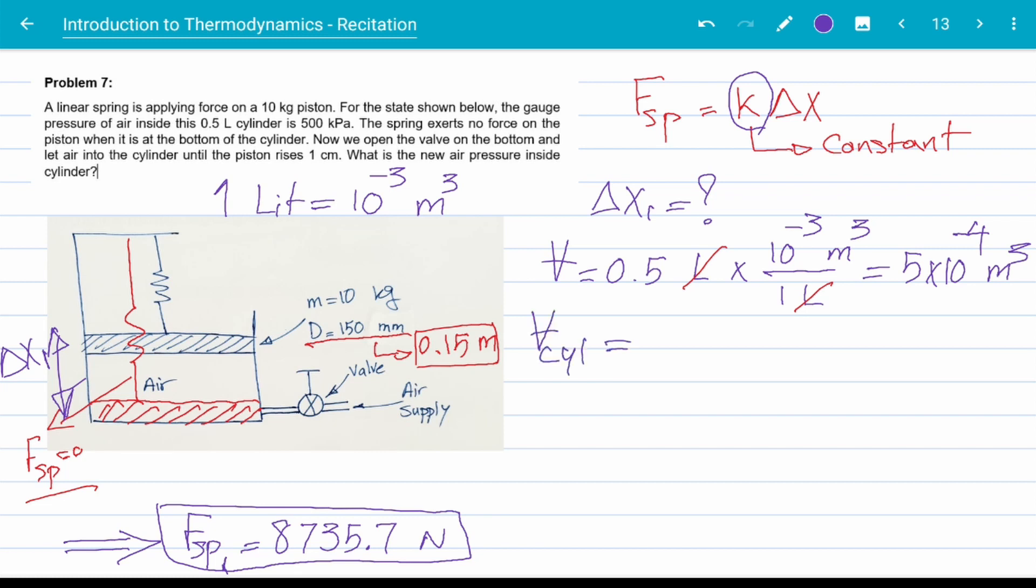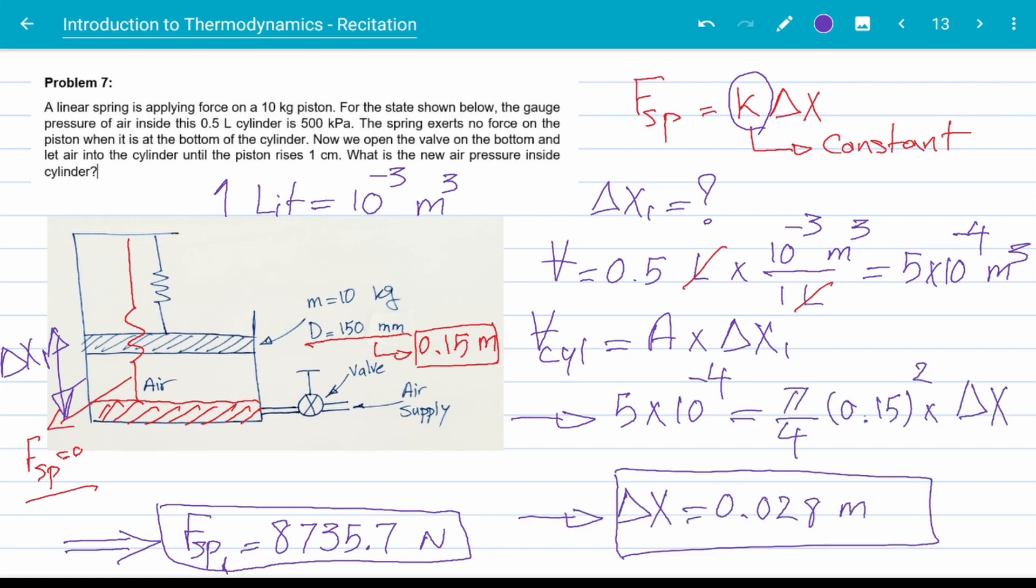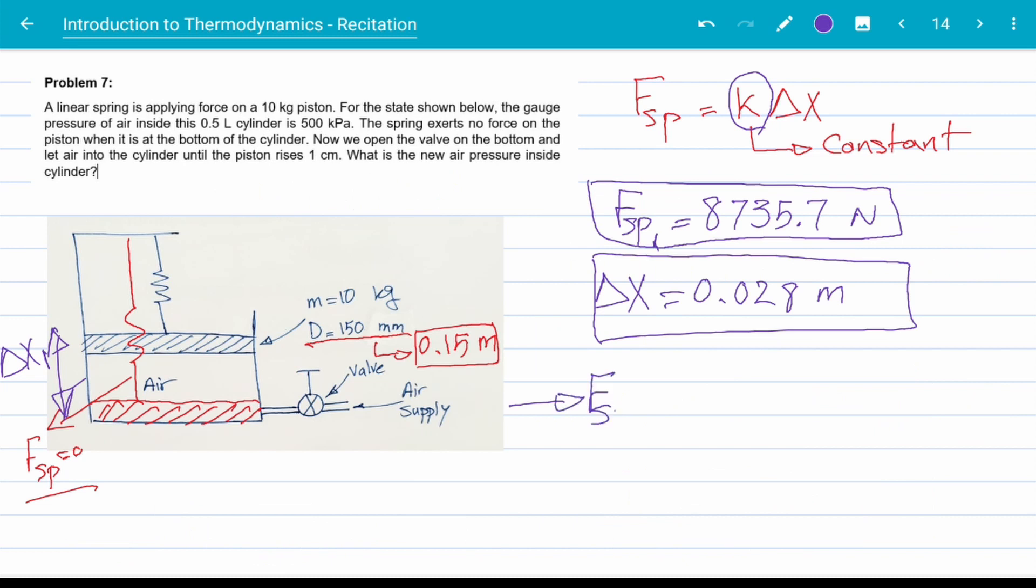Now the volume of the cylinder is height times the base area. Plugging our numbers, we get that delta X1 is 0.028 meters or 28 millimeters. Using our newly found value for delta X1 we can finally find the constant K.